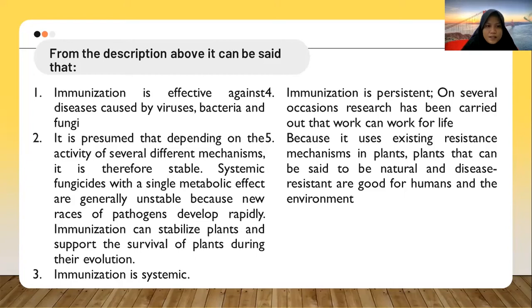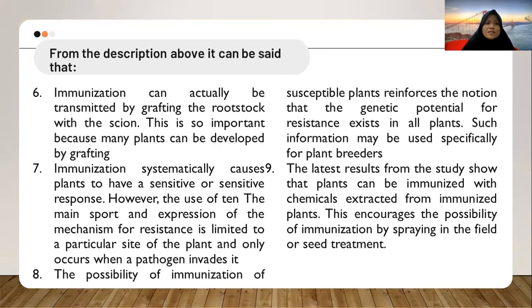Immunization can stabilize plants and support their survival during evolution. Third, immunization is systemic. Fourth, immunization is persistent — on several occasions, research has shown it can work for the life of the plant. Fifth, because it uses existing resistance mechanisms in plants, it can be said to be natural and beneficial for humans and the environment. Sixth, immunization can actually be transmitted by grafting the rootstock, which is important because many plants are developed by grafting.